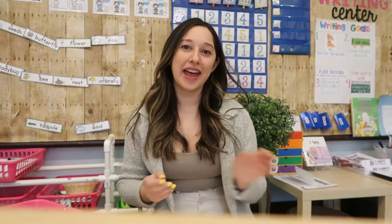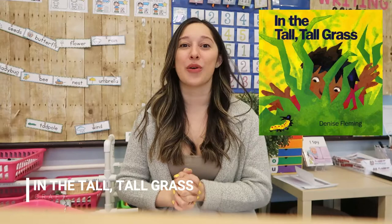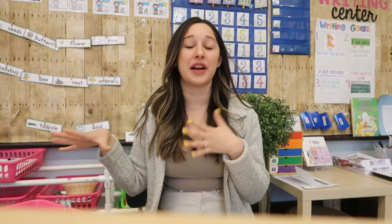Another insect book we're focusing on and doing a craft with is In the Tall Tall Grass. I was inspired by Two Printers activities and I'm going to infuse two of them into one project. We'll have green paper, cut grass — which is great for fine motor skills — then add a colorful insect behind the grass, and they'll write a sentence on the top as well. It's a great activity to incorporate literacy with a supplemental craft or writing activity.